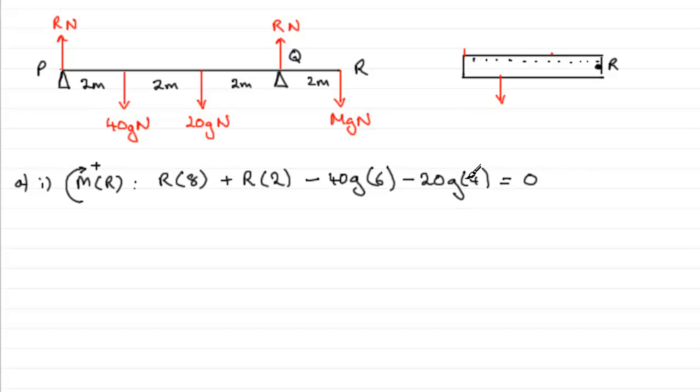So we've got 8R plus 2R here which is going to be 10R, so we therefore have 10R and then we've got minus 40G times 6 and minus 20G times 4, so if you work that out that comes to minus 320G and that equals zero. So if we add 320G to both sides, you've got 10R equals 320G, and you could divide through by 10 and you get R equals 32G newtons. Or if we now take G as 9.8, then you therefore have R equals 313.6 newtons.